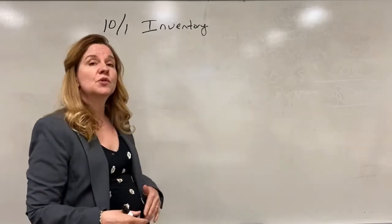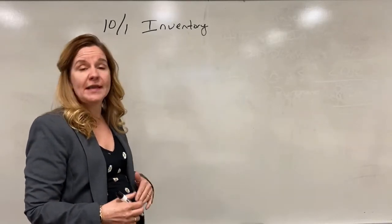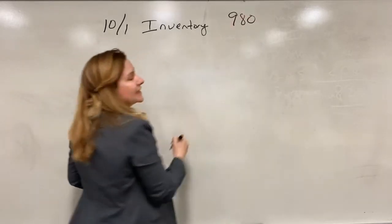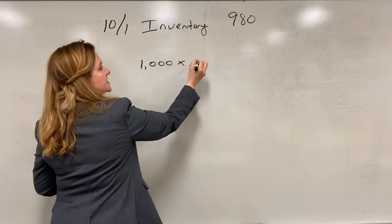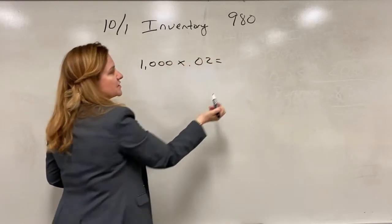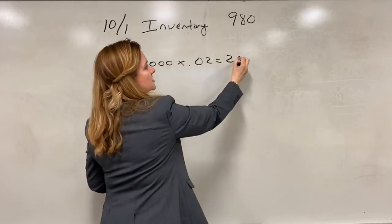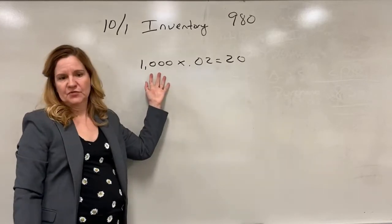So I'm going to record the inventory at the nine hundred and eighty dollars. And again that was the thousand dollars times the .02 which gives me a twenty dollar discount, and then subtracting the twenty dollars from the thousand.